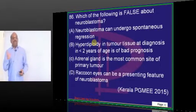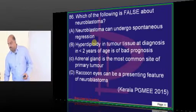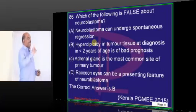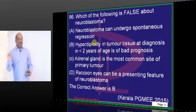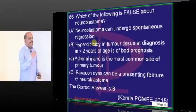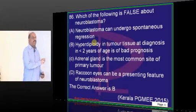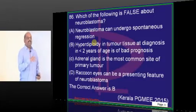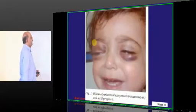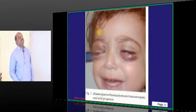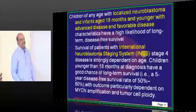What is characteristic about neuroblastoma? Neuroblastoma is basically hyperdiploid if you have a favorable prognosis. If the age is less than one year or less than two years, it is also a favorable prognosis. Raccoon eyes are what you basically remember as a feature.